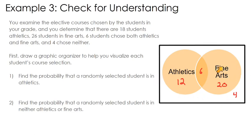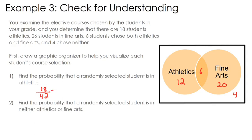Find the probability that a randomly selected student is in athletics. The number of successes is 18 — all students in athletics, including the six in both. The total outcomes are 12 + 6 + 20 + 4 = 42 students. So the probability is 18 out of 42, which simplifies and converts to roughly 0.43, or about a 43% chance that a randomly selected student is in athletics.